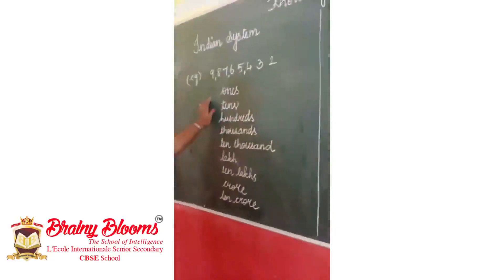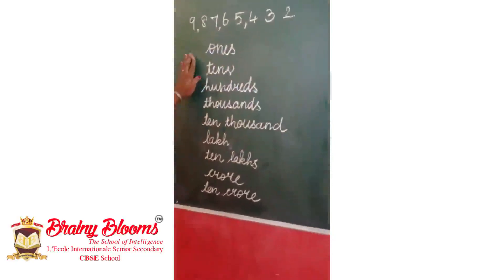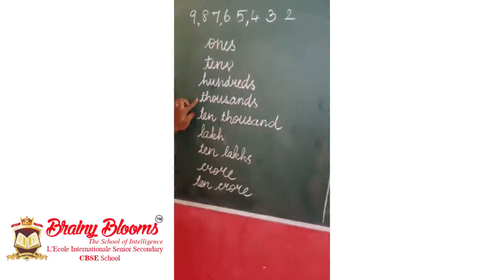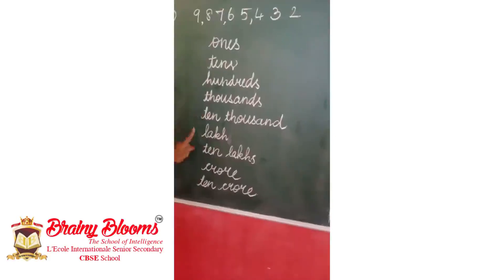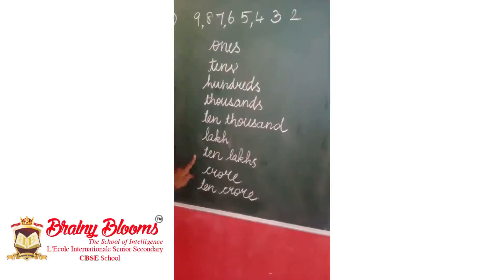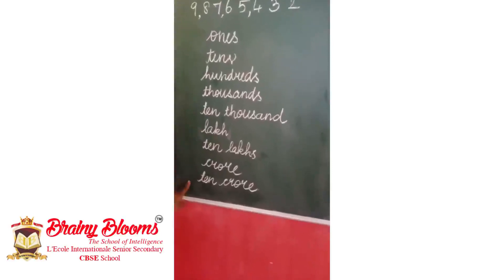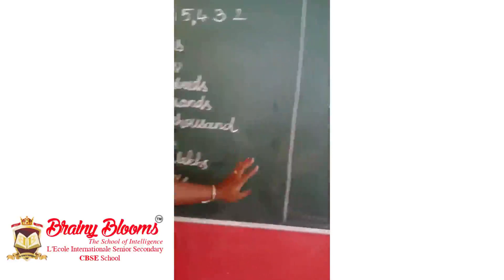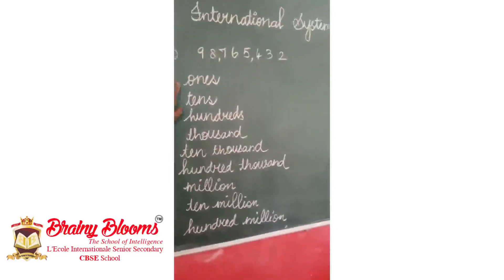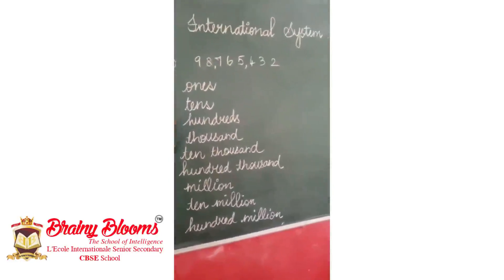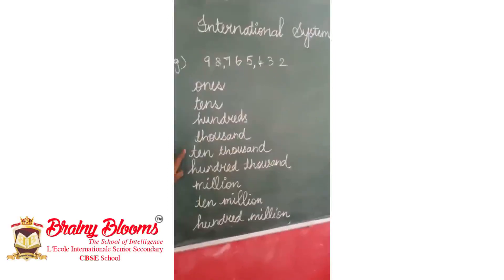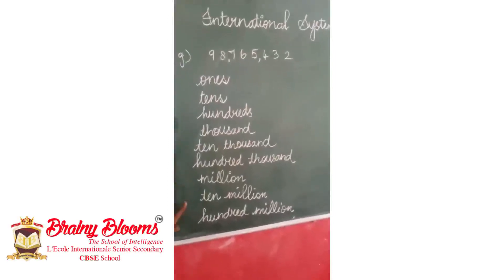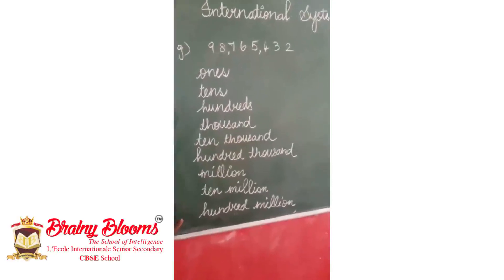Again I will repeat how to name a number. In the Indian system: ones, tens, hundreds, thousands, ten thousands, lakh, ten lakh, crore, and ten crore. In the international system: ones, tens, hundreds, thousands, ten thousands, hundred thousands, million, ten million, and hundred million. Take your notes and write it down.